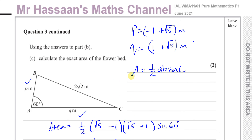That's the answer to part C and we have concluded question number 3 from this P1 paper. Other questions from this paper can be found in the playlist linked here, along with links to trigonometry questions from P1. You can also find links to other Edexcel International A-Level papers — P1, P2, P3, P4, M1, S1 — and IGCSE papers in the description box.